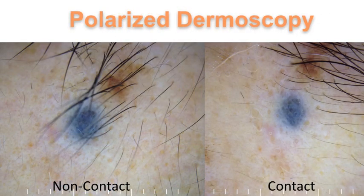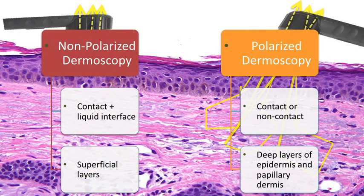Here we have an example of a blue nevus taken with polarized dermoscopy, both in the contact and non-contact mode. When using the contact mode with polarized dermoscopy, we can choose to have a liquid interface, but it's not always needed. Some of the main differences: non-polarized dermoscopy always requires the contact mode and always requires a liquid interface. Superficial layers of the skin are better visualized with non-polarized dermoscopy. In contrast, polarized dermoscopy can be performed in the contact or non-contact mode, and a liquid interface is optional when using the contact mode.